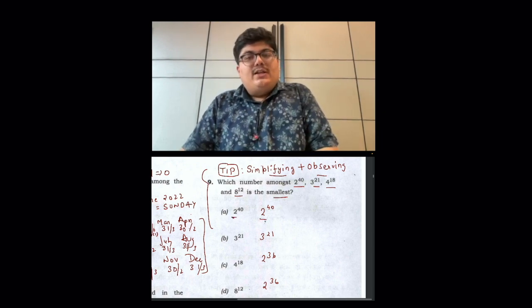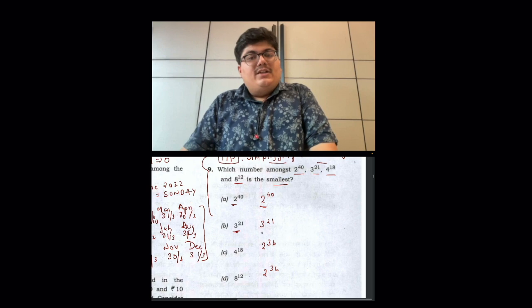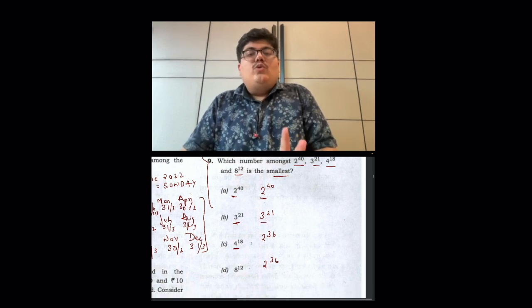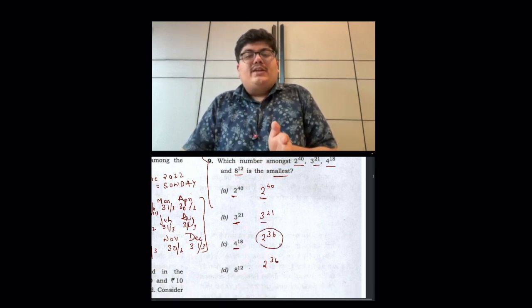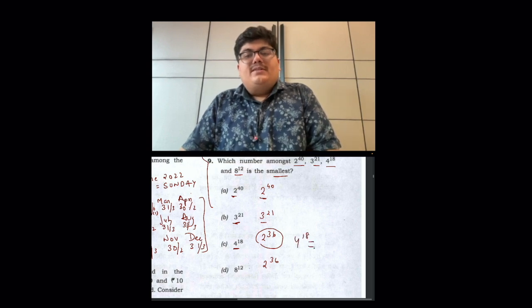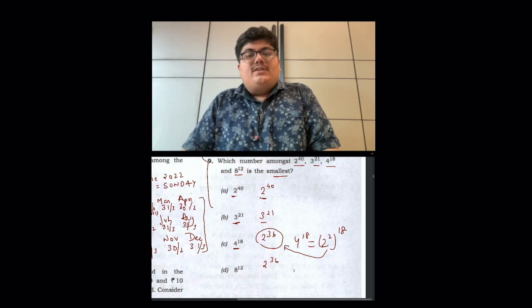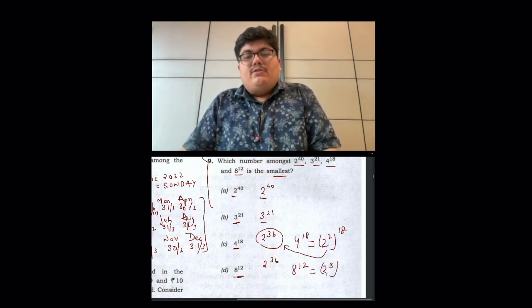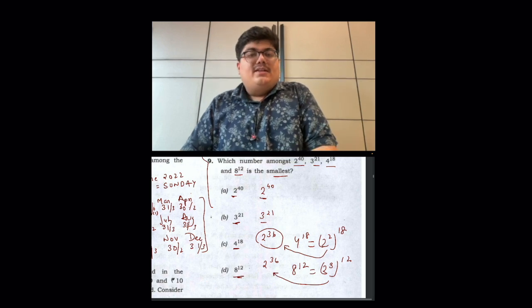Now 2's factor is 2, so 2 power 40. 3's factor is 3. Now 4's factor is 2, so 4 power 18 is 2 power 36. So 4 power 18, we can see that 2 square power 18. That means this. Similarly, 8 power 12, so 8 power 12 is equal to 2 cube power 12.